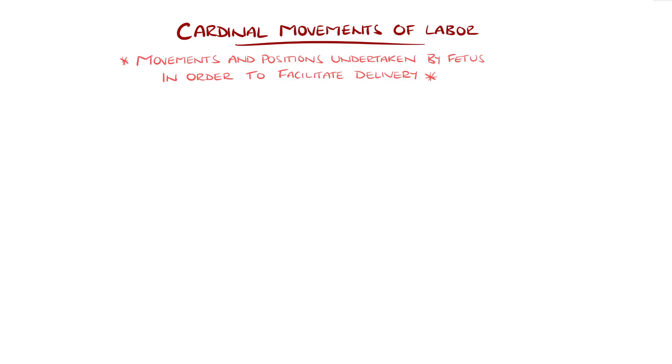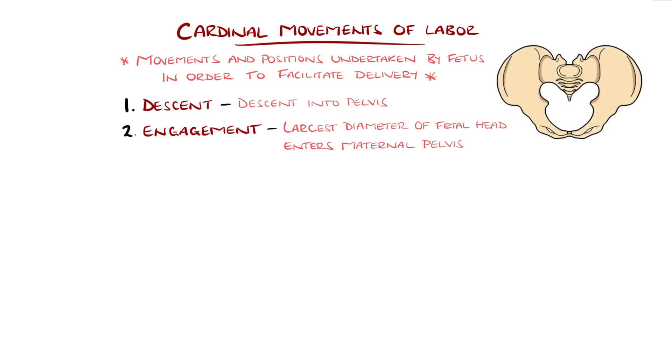The first cardinal movement of labour is descent, where the fetus descends into the pelvis. Mostly happening simultaneously, along with engagement, which is when the largest diameter of the fetal head descends into the maternal pelvis. These can happen before the onset of true labour, but will generally feature throughout stages 1 and 2.